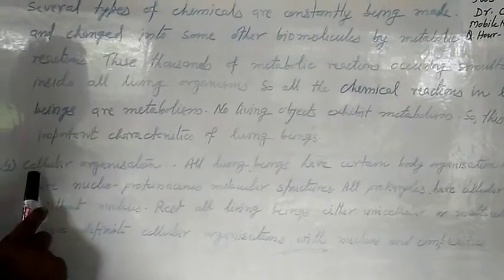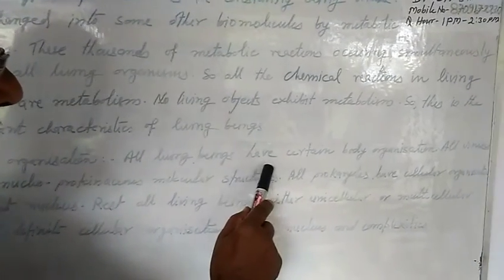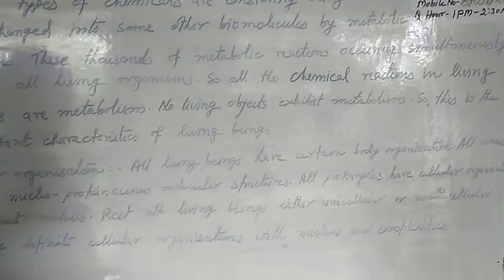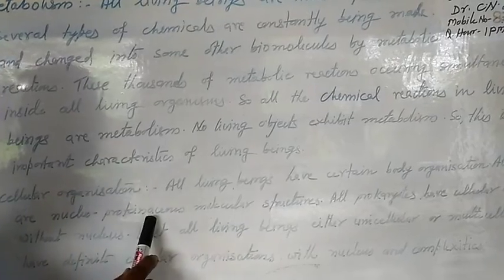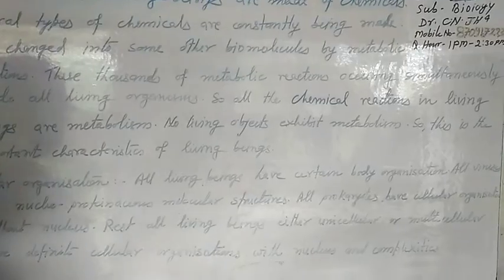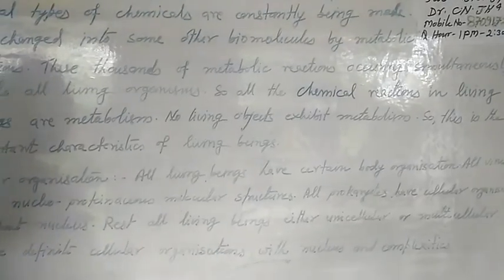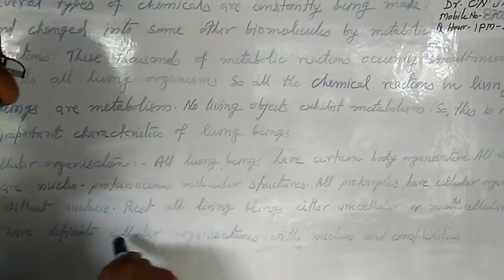Next is cellular organization. All living beings have certain body organization. For example, all viruses are nucleoproteinaceous molecular structures. Therefore, viruses are considered the connecting link between living and non-living things, as they show both types of characters — non-living as well as living.